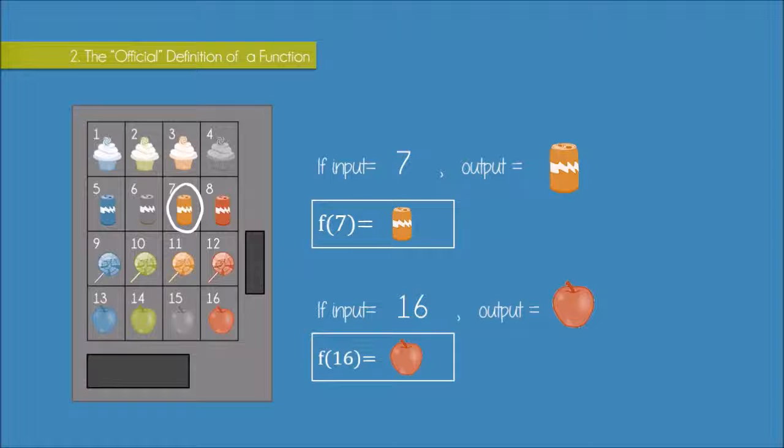And I can write that using function notation as f of 7 equals orange can. You can see that in these brackets here, I write my input. So when my input is 7, my output is the orange can.